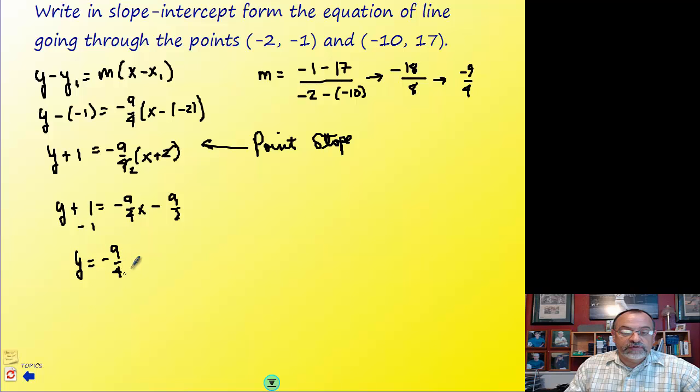So negative 9 fourths x, we have minus 9 halves, and then we're subtracting 1. Now we need to add the 9 halves and the 1s together, but those don't have the same denominator, so I'm going to have to change it to the same denominator. So I'm going to rewrite 1 as 2 over 2. That's still 1, but now it has a denominator of 2.